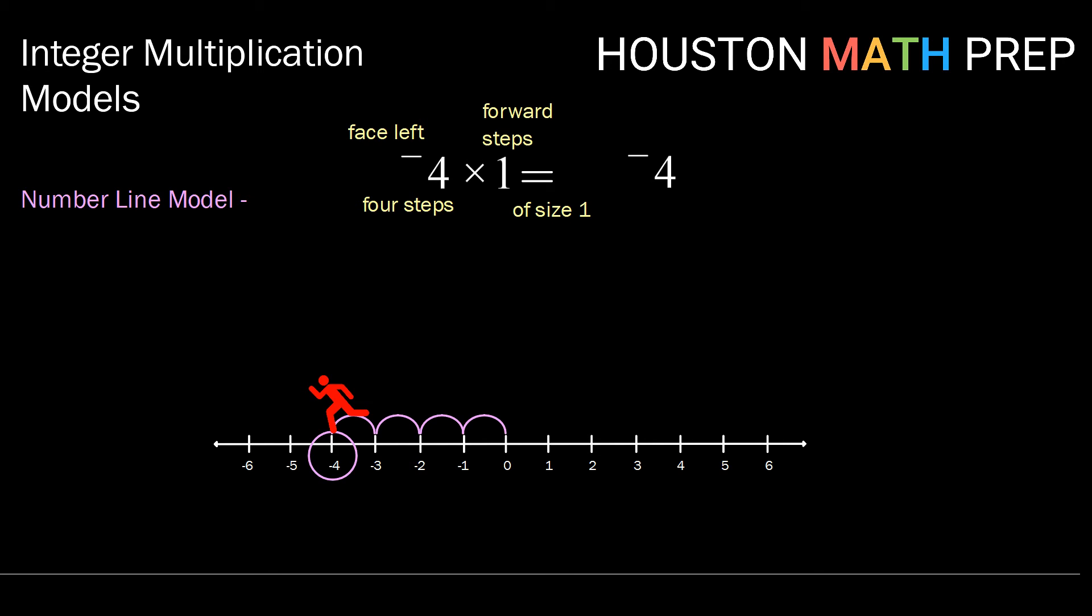We've seen two combinations of multiplying a positive and a negative. Let's see what a negative times a negative looks like on the number line. We start at 0. Since we have negative 2, we start facing left. We're going to take 2 backward steps of 3 units each. These are big steps, so we're going to really stretch our little creature's legs here.